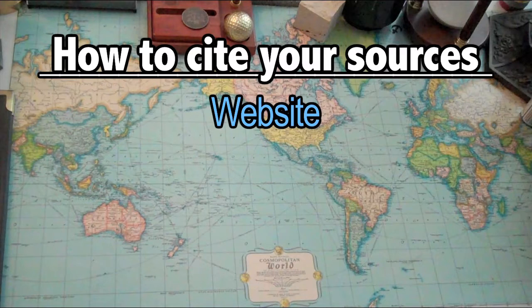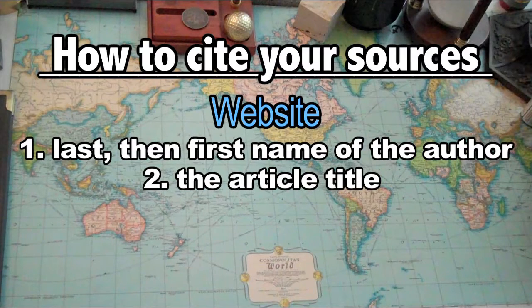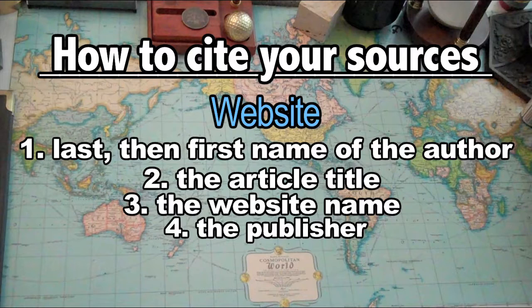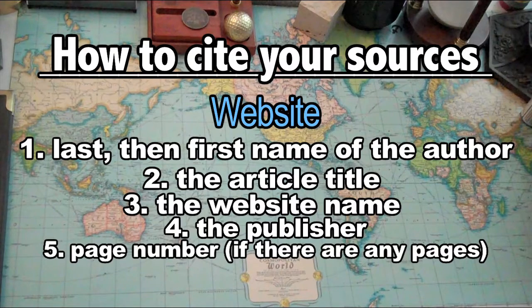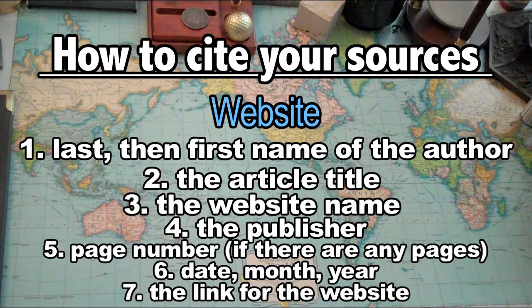Let's use one more example on how to cite a source — let's try citing a website. The way to write a cited source for a website would be: one, last then first name of the author; two, the article title; three, the website name; four, the publisher; five, page number, if there are any pages; six, the date, month, then year of when the article was made; and seven, the link for the website. Keep in mind that the website link is only necessary if the professor asks for it — most of the time it's not necessary. There are other ways to cite your sources in an essay, but the one I just showed you is the basic form.